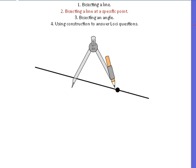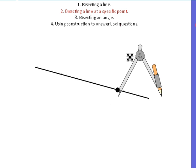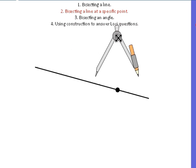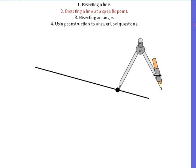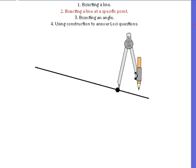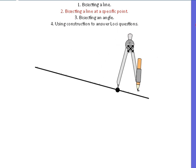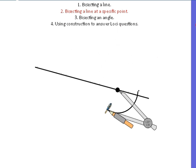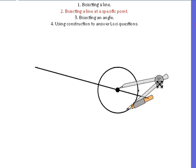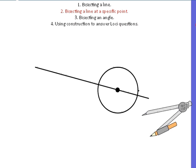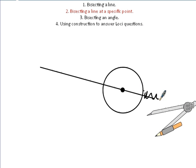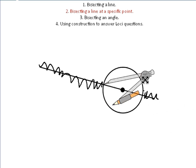So, compass again. This time, because we can't go to one end and then the other end, we need to create some new end points for the line. The easiest way is to draw a nice big circle — put the compass right in the middle of the point and draw a circle. We'll ignore these bits of our line and just focus on the circle. These become our new end points, so exactly the same as last time.